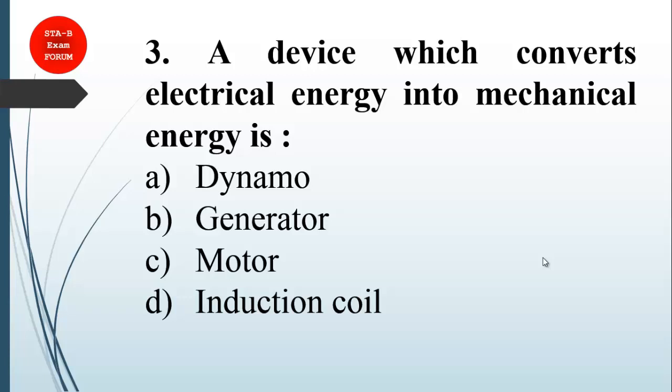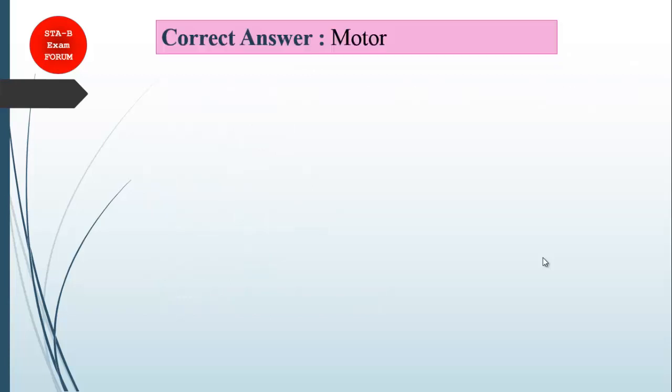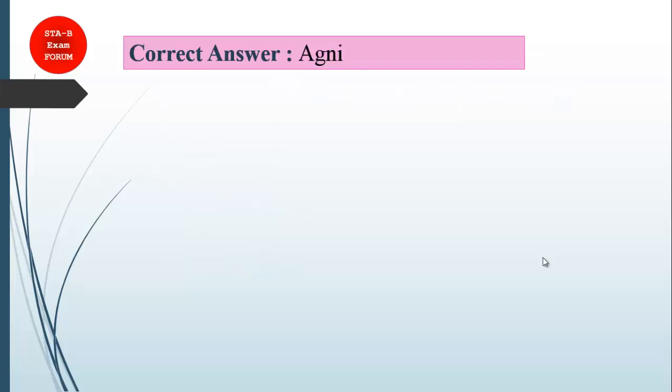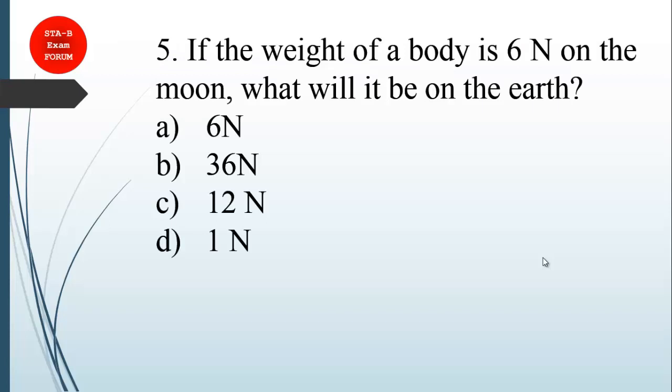Which of the following is the first intermediate range ballistic missile in India? This is related to DRDO products. Akash is a surface-to-air missile, whereas Prithvi and Trishul are surface-to-surface missiles. Agni is the intermediate range ballistic missile. The correct answer is Agni missile.